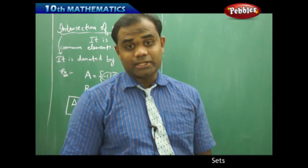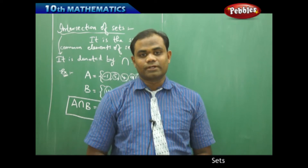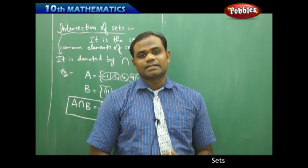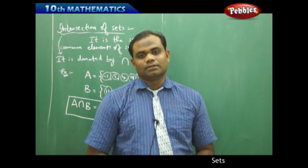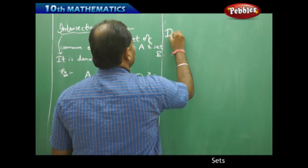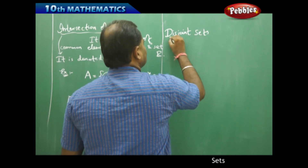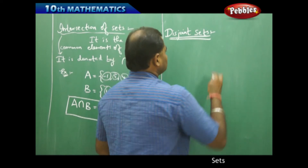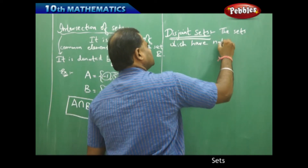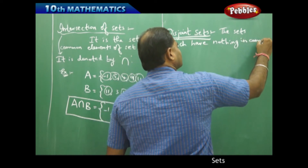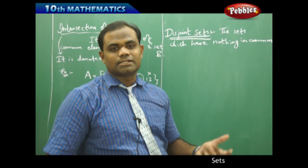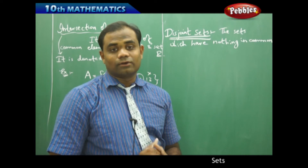Now that we have learned about intersection of sets, we come to disjoint sets as a special case of intersection. The word 'disjoint' means they are not joined with each other. Mathematically, disjoint sets are defined as sets which have nothing in common. If you pick the common elements in sets A and B and find nothing common, then the two sets are disjoint. Even if one element is common, we cannot say the sets are disjoint.